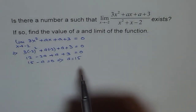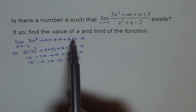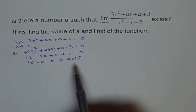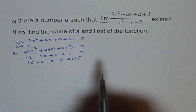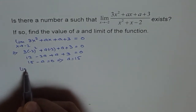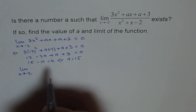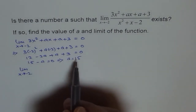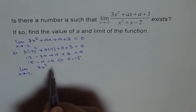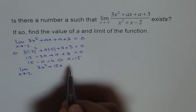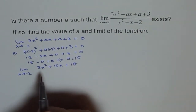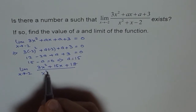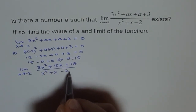Now since we have found a, we have to find the limit of the function knowing that a is 15. We can plug in 15 in our equation and then proceed to find the limit. So we get the limit as x approaches minus 2 of (3x² + 15x + 15 + 3), which I can write as (3x² + 15x + 18) over (x² + x - 2).